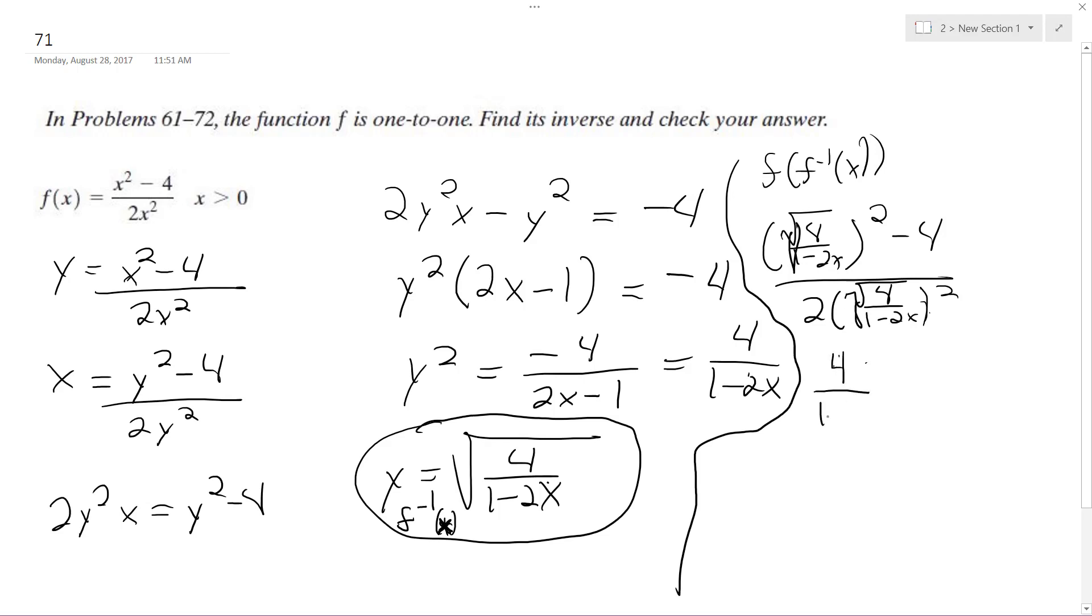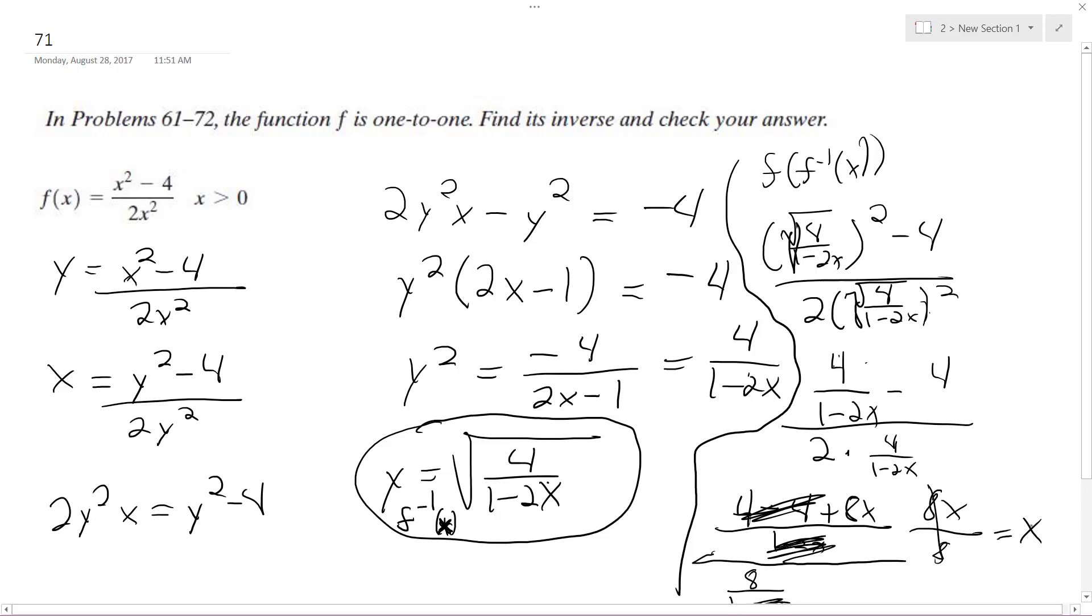4 over 1 minus 2x minus 4, over 2 times 4 over 1 minus 2x. So this becomes 4 minus 4 plus 8x over 1 minus 2x, over 8 over 1 minus 2x. These cancel out. This cancels out. We get 8x over 8, which reduces down to x. So that proves,